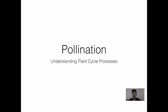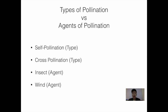I decided to touch on the topic of pollination because a lot of my students, when I ask them if they know what pollination is, they say yes — but the only thing they tell me about is self pollination and cross pollination. This is only half of pollination. When we talk about pollination there are two kinds: the types of pollination, which are self pollination and cross pollination, and the agents of pollination, where we talk about insects and wind.